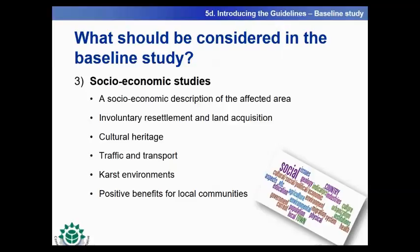Regarding the socioeconomic studies — the third attribute that should be considered in a baseline study — we give examples in the guidelines of what social information should be compiled. These include a socioeconomic description of the affected area, local and regional economic situation, existing infrastructure, demographic information, health, security, and safety. Environmental resettlement and land retention should also be compiled, as well as natural heritage, cultural heritage, traffic and transport — noting that traffic is a potential and critical community safety concern. The importance of karst environments in cement production is particularly relevant to the cement industry. The project may also provide positive benefits for local communities, such as job creation and enhancement of the local economy.